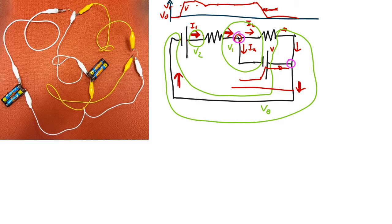So in this case, we take the first junction here. We can find that the current in is I1, the current out is I2 and I3, so I1 equals I2 plus I3.